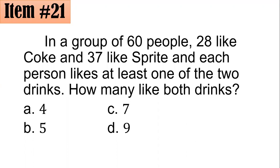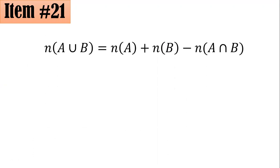Since the total number of people is 60, so 60 here is the union. If you're asking how many like both drinks, this is like the intersection. We have to remember in our set theory that if you have the cardinality of the union of two sets, it's equal to the cardinality of the first set plus cardinality of the second set minus the cardinality of their intersection.